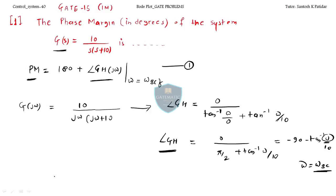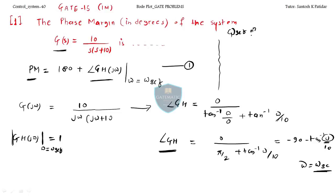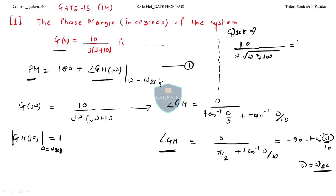You need to calculate ω_gc. The gain crossover frequency is the frequency where the magnitude of the system equals 1. So let us find the magnitude: 10 divided by ω times the square root of (ω² + 100), equated to 1.